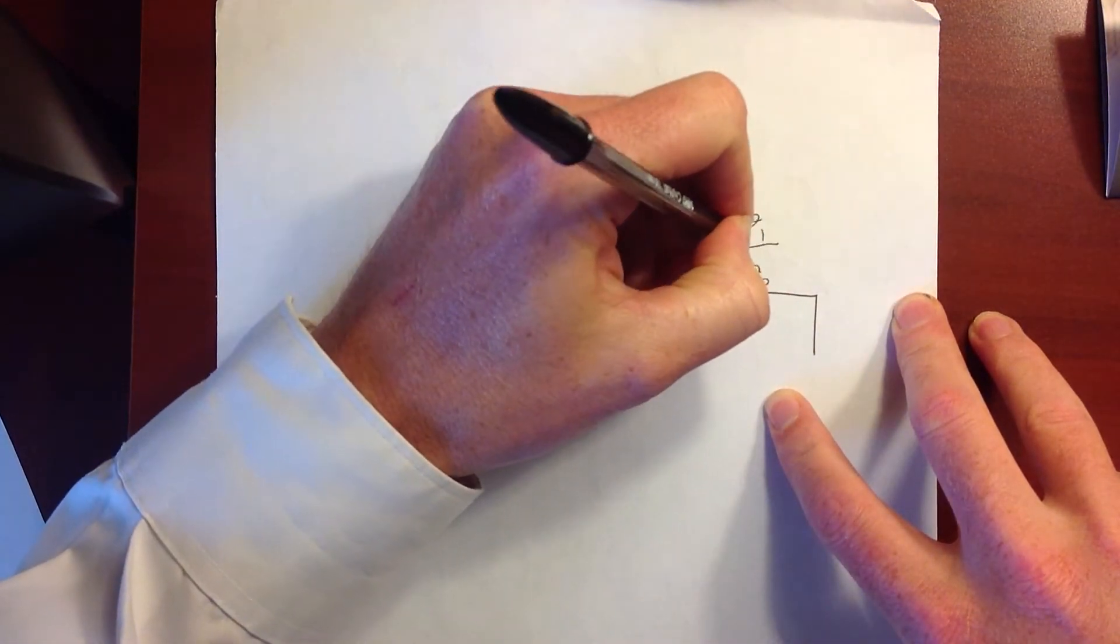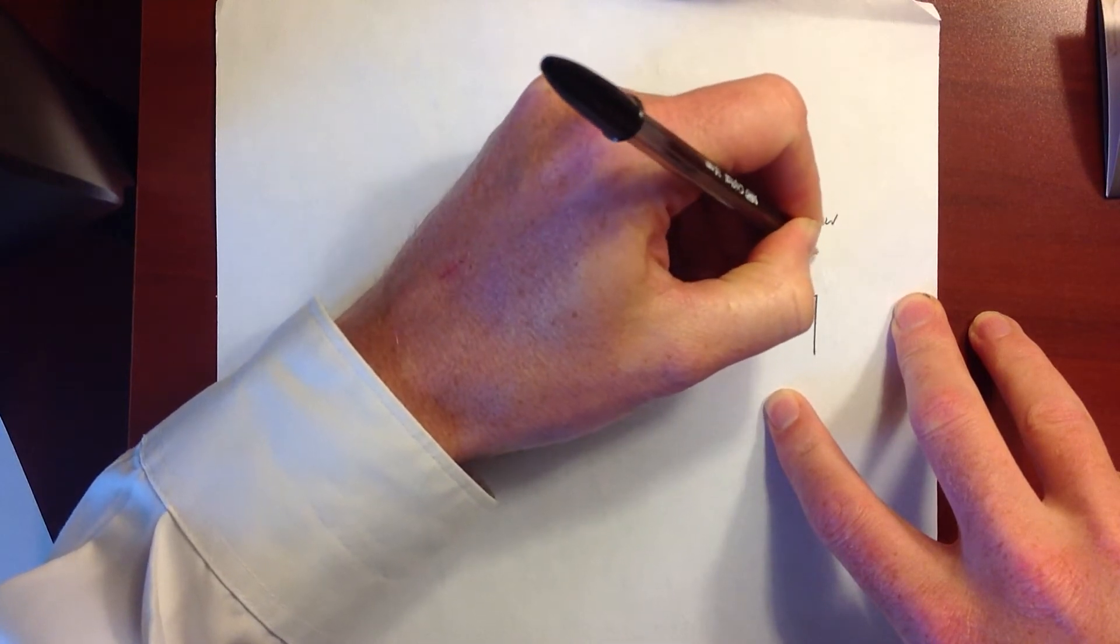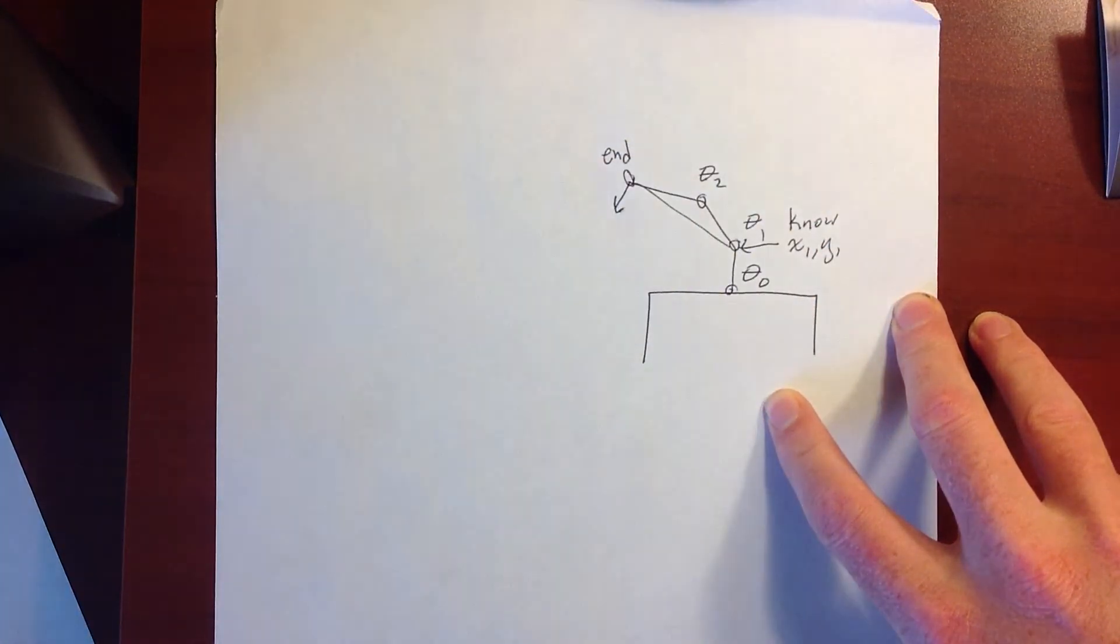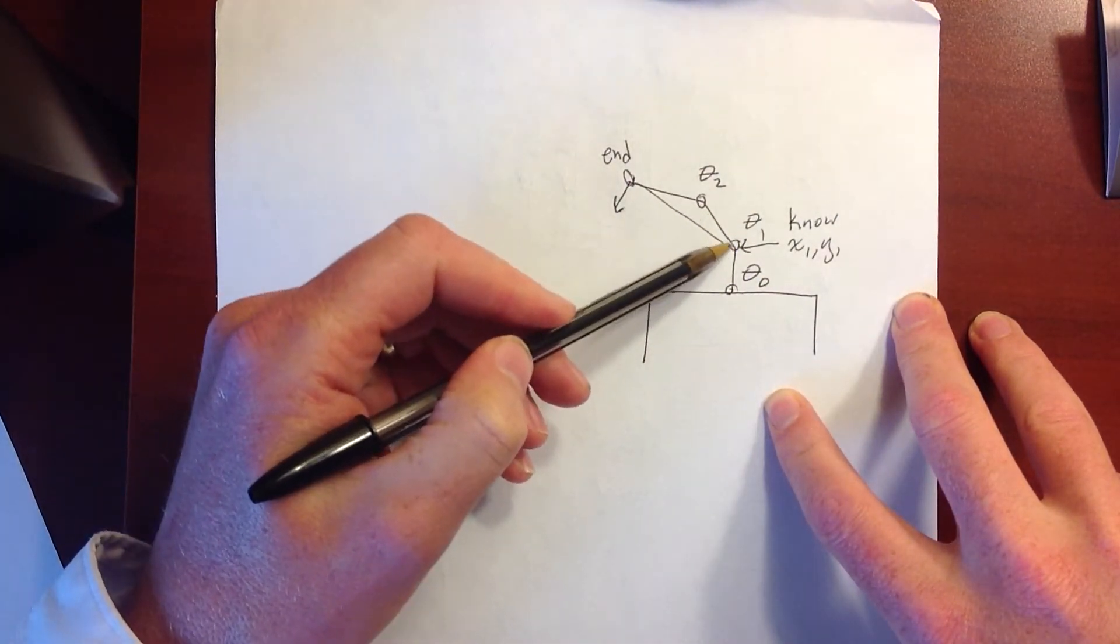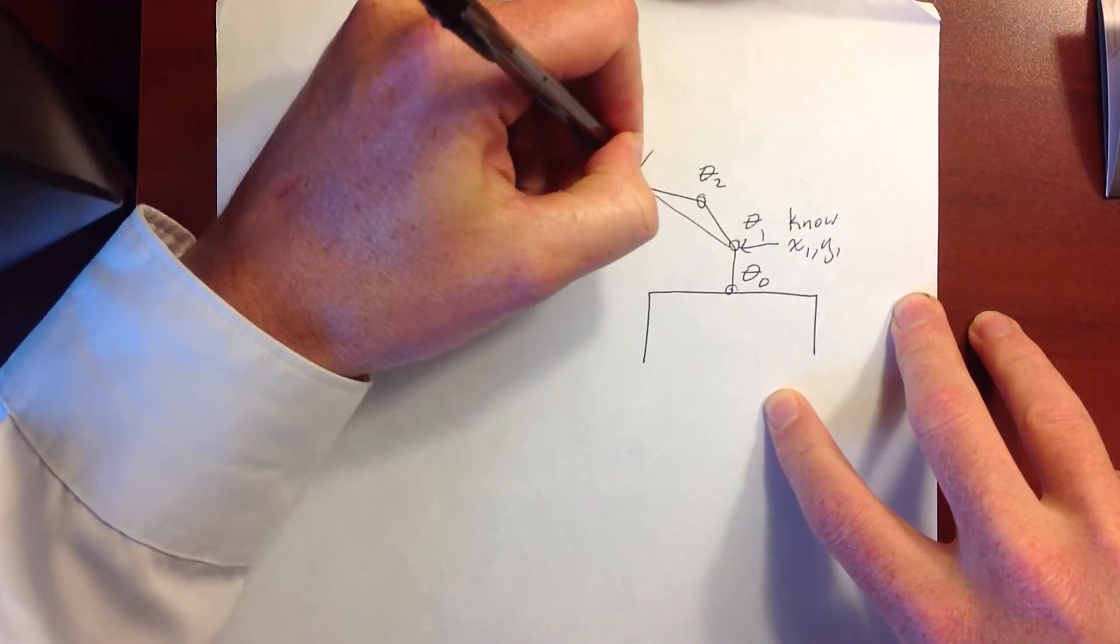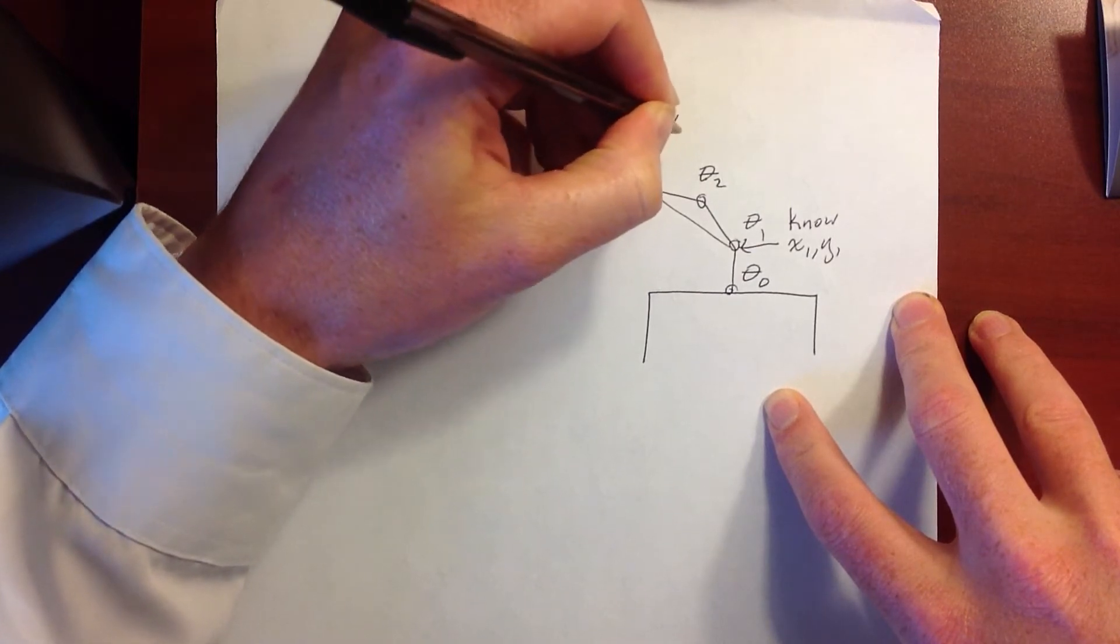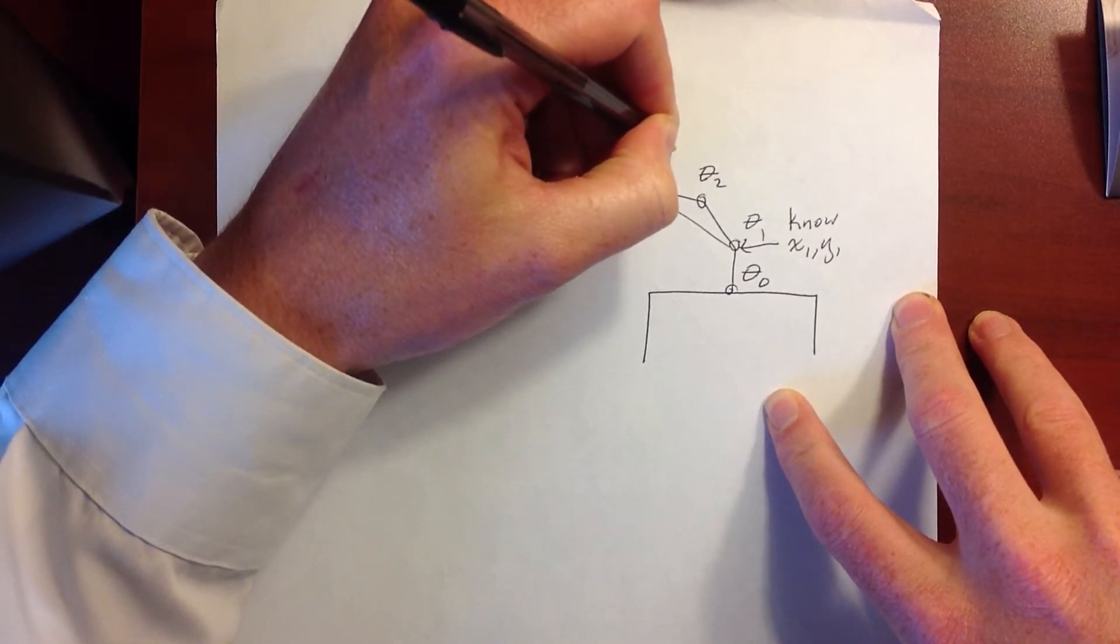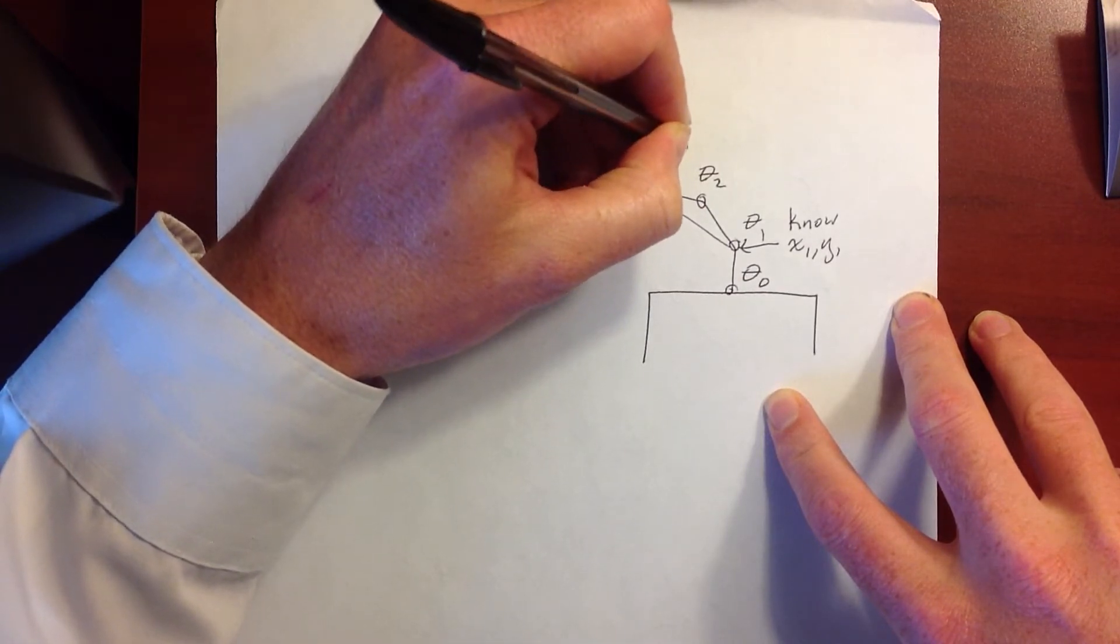So at this point, we'll assume that we know x1 and y1, which are the x and y positions at the end of the beginning end of the first segment right here. And we'll assume that we also know the position of the end effector, which I'll call just end for end effector position.